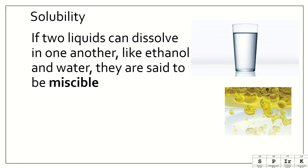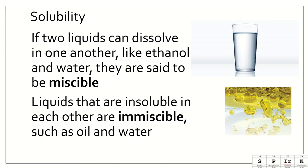So if two liquids can dissolve in one another, like ethanol and water, they are said to be miscible. Liquids that are insoluble in each other are called immiscible, such as oil and water. And these are very similar to the terms we've talked about when we talk about solids in water, or solids in liquid. We use the terms soluble and insoluble. So soluble and insoluble are for solids dissolving in a liquid, whereas miscible and immiscible are when we're talking about dissolving a liquid in another liquid.